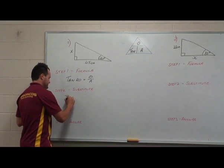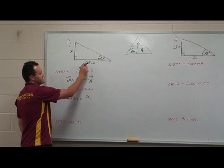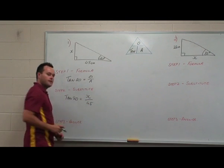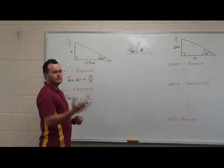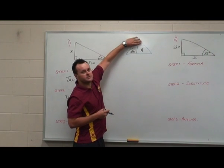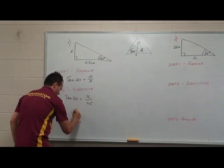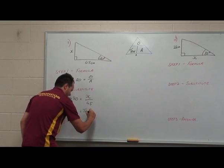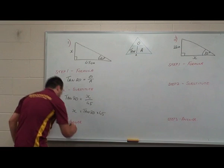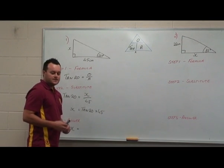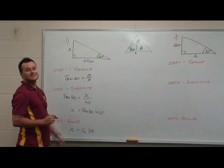Step two, substitute into that formula. The opposite is x — our unknown — and the adjacent is 45. The next step is we want to get x by itself, so we want to do our rearranging. We're going to cover what we're trying to find. We're trying to find an opposite side, so that means we need to do tan of the angle multiplied by the adjacent. So tan 20 multiplied by 45 will give us our answer, which is 16.38.